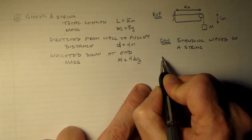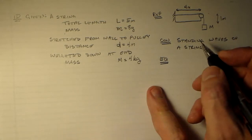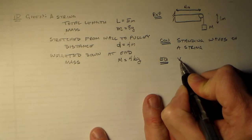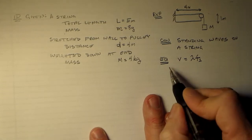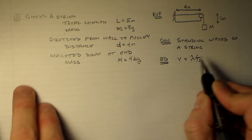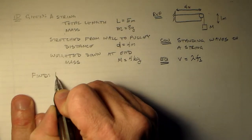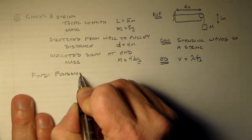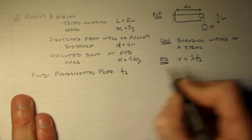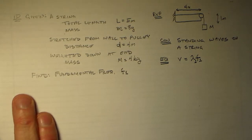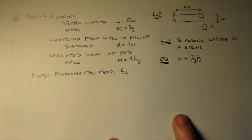And our equation, our main equation for that is going to be V is equal to lambda F1. And the reason why I choose this as the main equation is because I want to find the frequency. I didn't write it over here. Find the fundamental frequency F1. And that's going to be associated with the wavelength lambda 1.